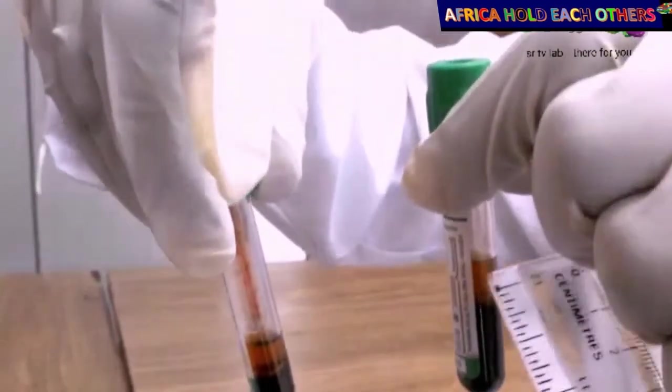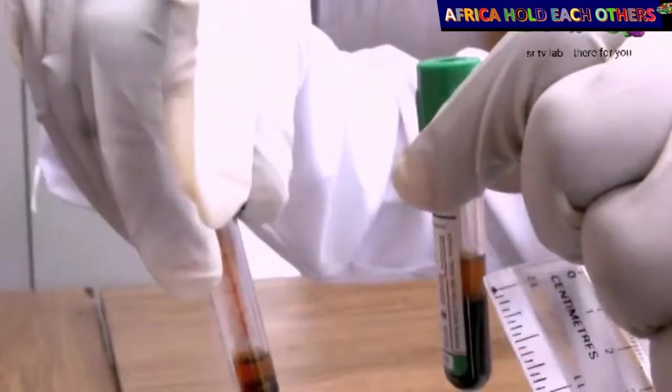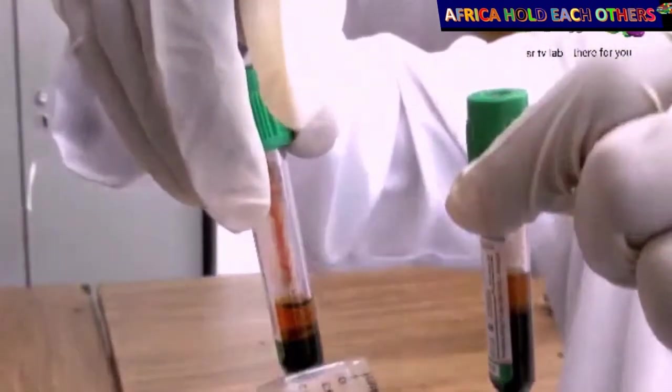In these two tubes you can see there is the down part and the top part. The top part is the one which is plasma. That is why you can see if there is hemolysis or not.